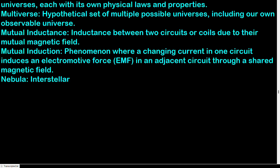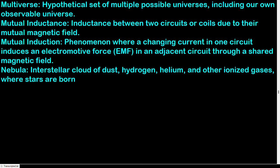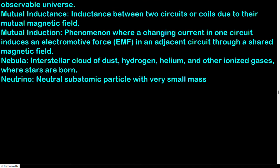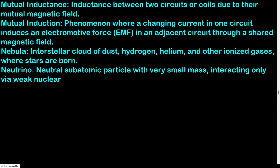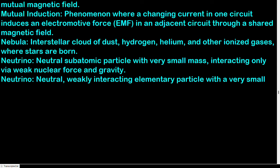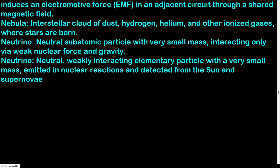Nebula: interstellar cloud of dust, hydrogen, helium, and other ionized gases, where stars are born. Neutrino: neutral elementary particle with very small mass, interacting only via the weak nuclear force and gravity, emitted in nuclear reactions and detected from the sun and supernovae. Neutron: subatomic particle with no charge, found in the nucleus of an atom.